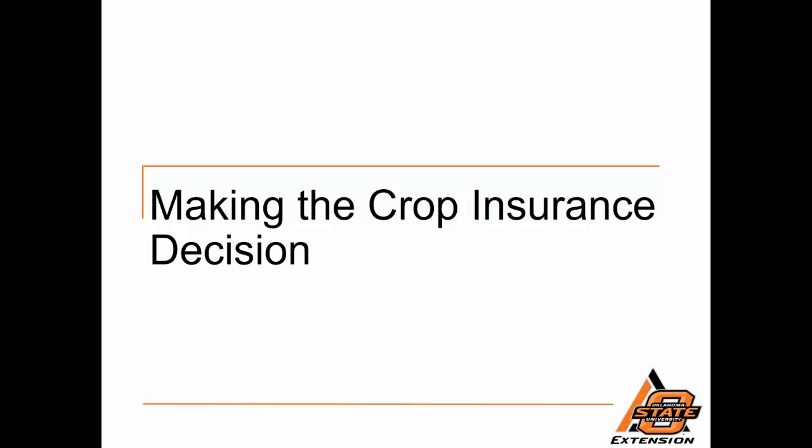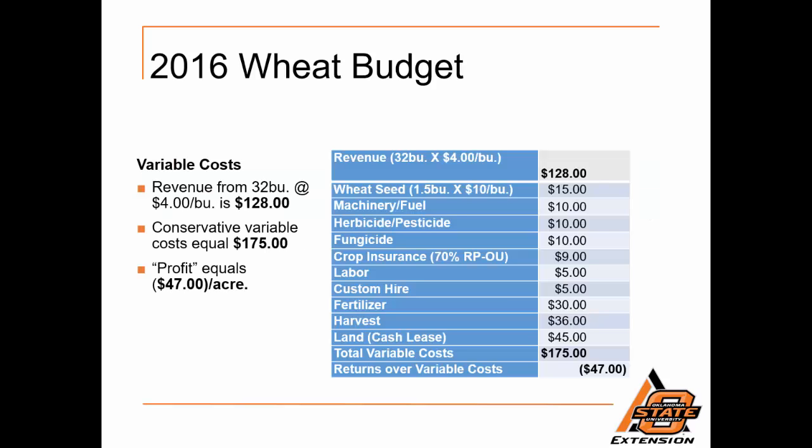Making the crop insurance decision. Here we have an example of a 2016 wheat budget where our variable costs are included. We have revenue at 32 bushels at $4 per bushel, equaling $128 for an example. The conservative variable costs are equal to $175 and are all listed out in the table — wheat seed, machinery and fuel, herbicide, fungicide, crop insurance, labor, custom hire, fertilizer, harvest, and cash lease. Profit equals a loss of $47 an acre, where we see our revenue is not covering our cost of production in this example.